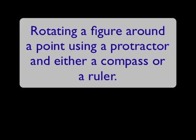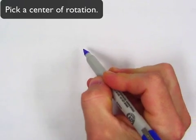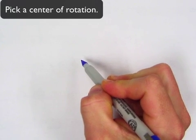In this video I want to show you how to rotate a figure around a fixed point. To make a figure we want to rotate and then pick a center of rotation. So just kind of pick it somewhere in the center of your paper.